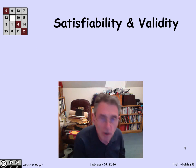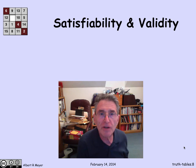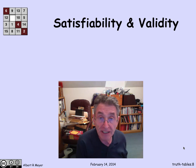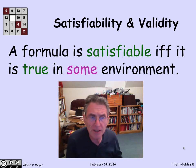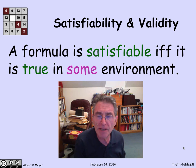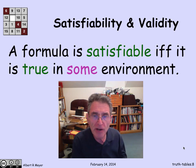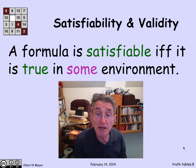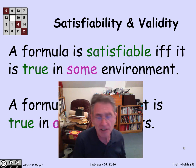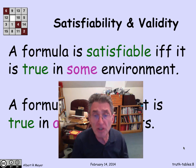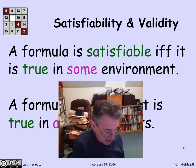Now we come to two crucial properties of formulas: satisfiability and validity. A formula is satisfiable if and only if it's true in some environment — that is, there is some way to set the values of the variables so the formula comes out to be true. A related idea is that a formula is valid, also called a tautology, if and only if it's true in all environments — no matter what you set the variables to, it's going to come out to be true.